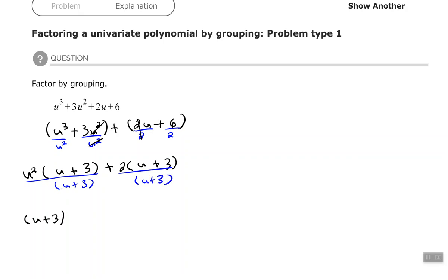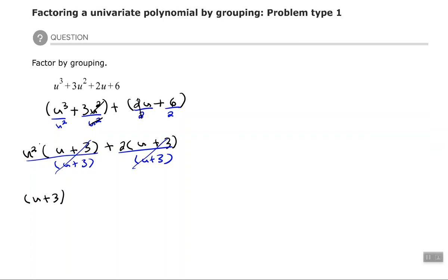So if I divide each one of those by u plus three, they cancel each other out. And that leaves me with u² plus 2. And remember, we put that in a set of parentheses together. And you have factored that polynomial by using the grouping method.